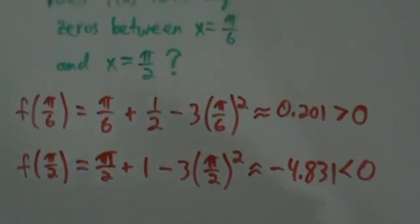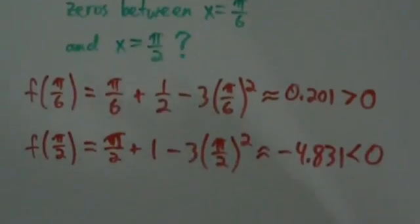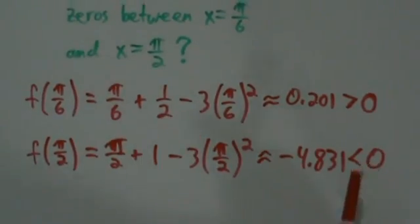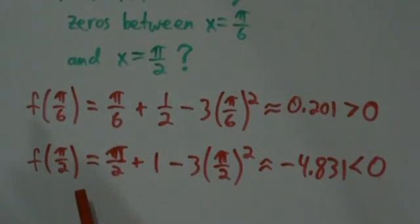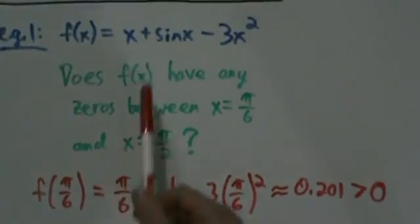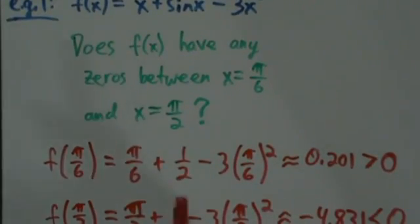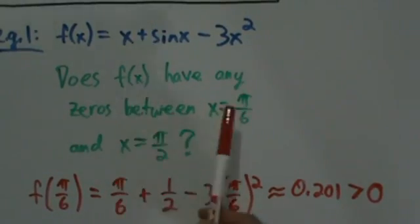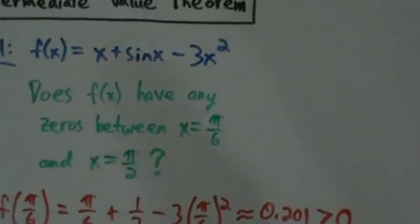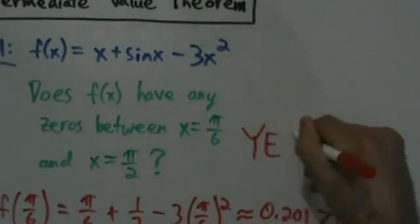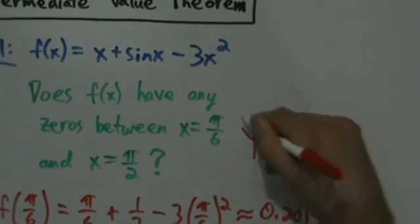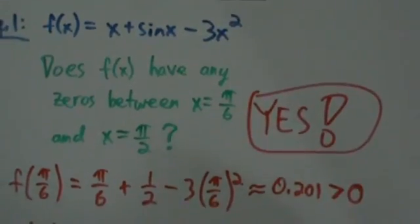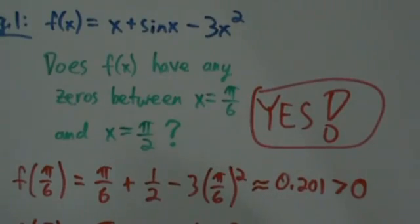So that's great. This function is continuous everywhere, f(π/6) is positive, and f(π/2) is negative. They have opposite signs, so the answer to the question is yes. Does f(x) have any zeros between π/6 and π/2? Yes it does, by the intermediate value theorem.